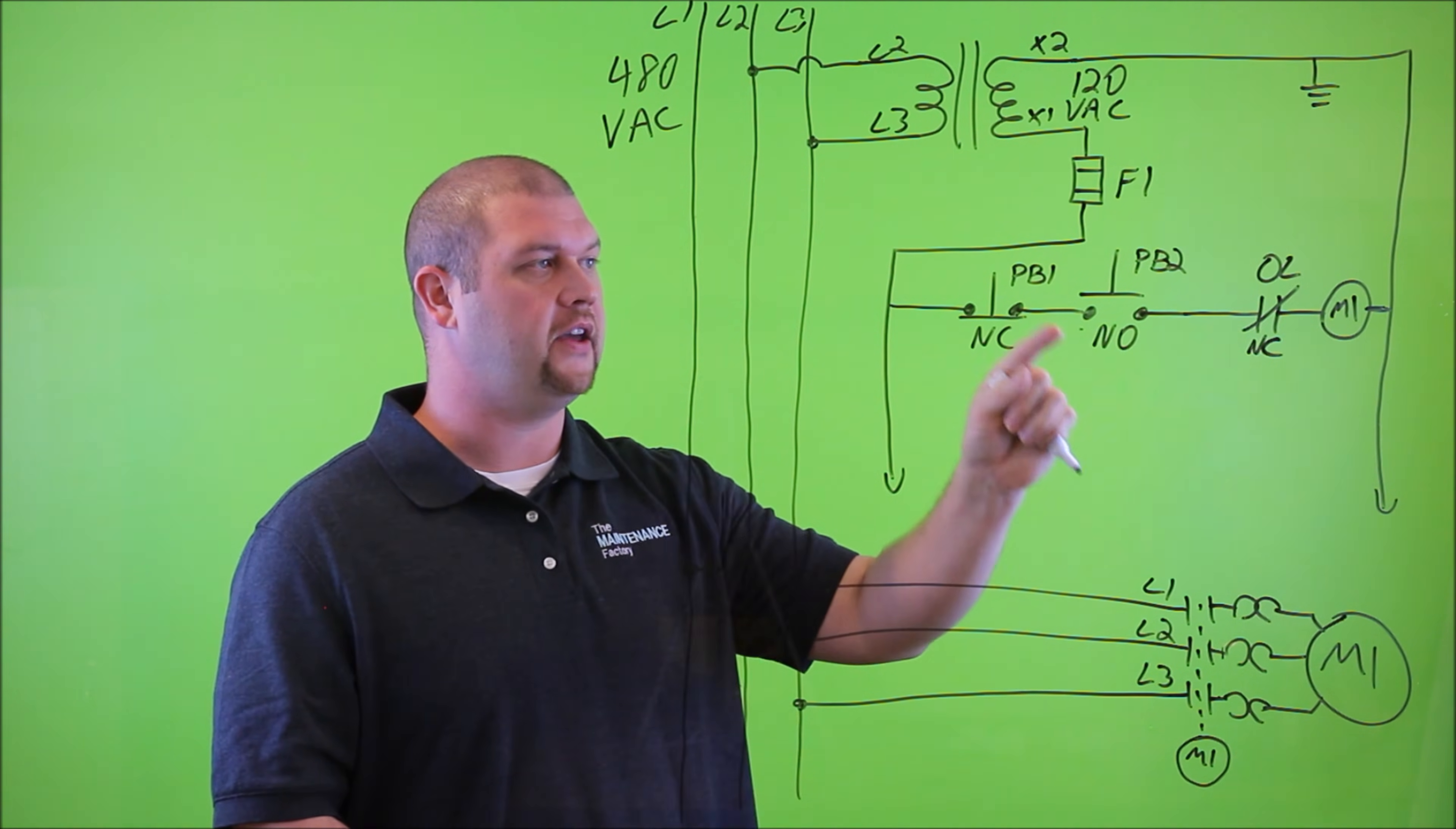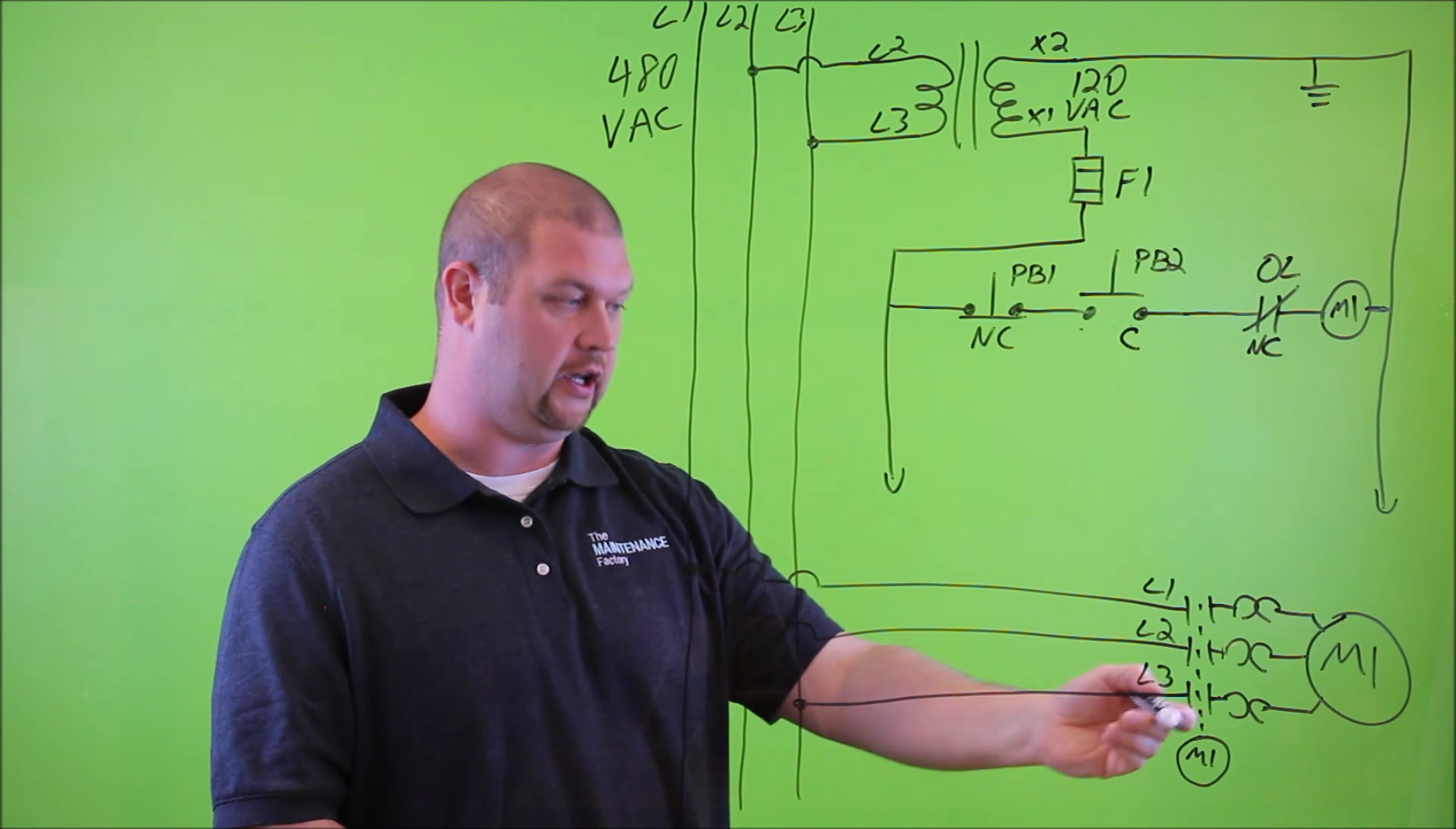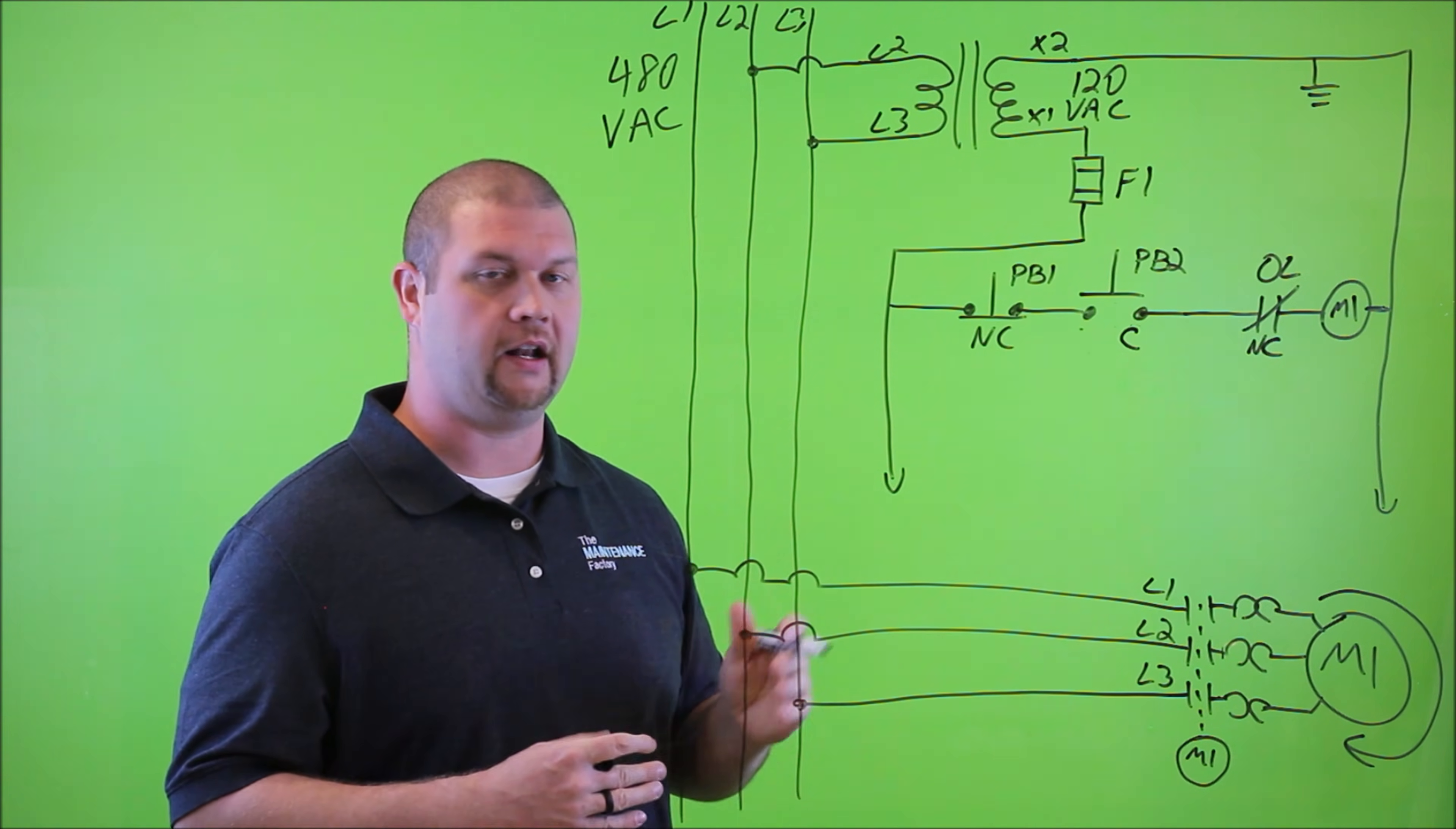So let's say that we would come along and then depress the start button, which is PB2. It's going to switch states from normally open to closed, and then that's going to provide a path for current to flow, and it's going to energize that coil, thus closing the contacts, providing power to the motor, and then the motor will then rotate. Now, that's fine and dandy if we want to sit here and continuously hold our finger on this button the entire time we expect the motor to perform work. But that's not an ideal condition.